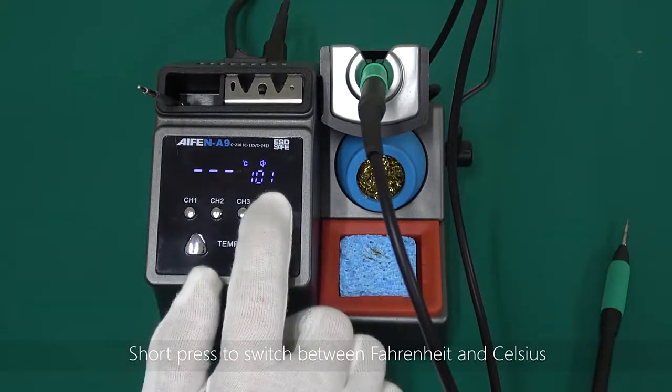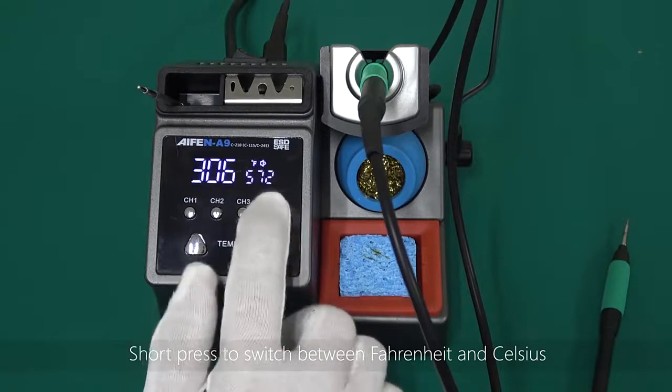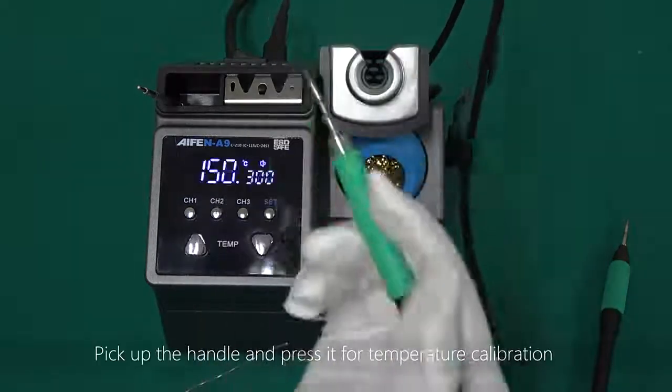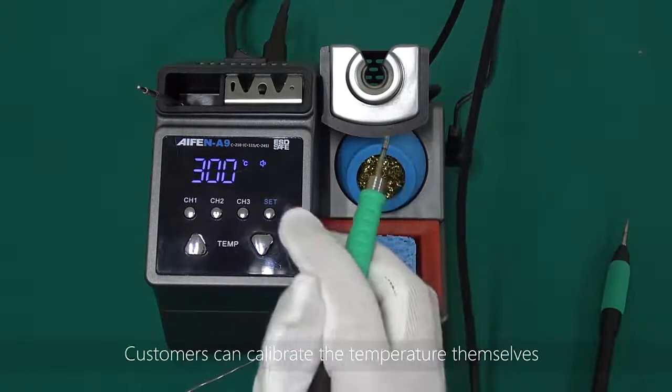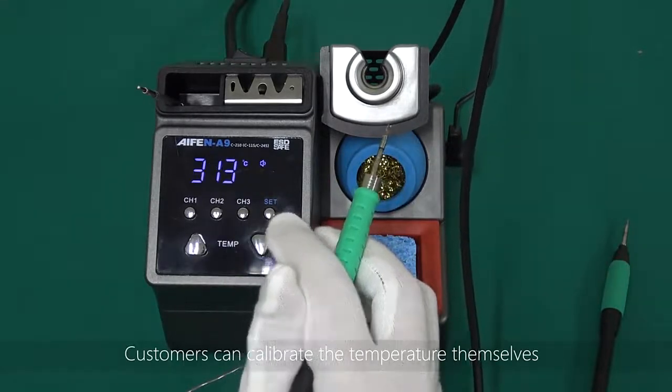Set key. Short press to switch between Fahrenheit and Celsius. Pick up the handle and press it for temperature calibration. Customers can calibrate the temperature themselves.